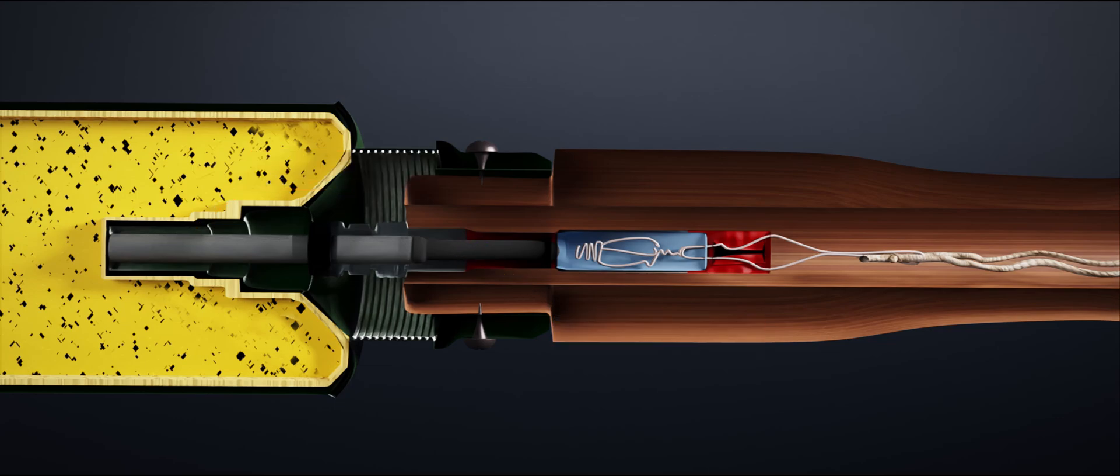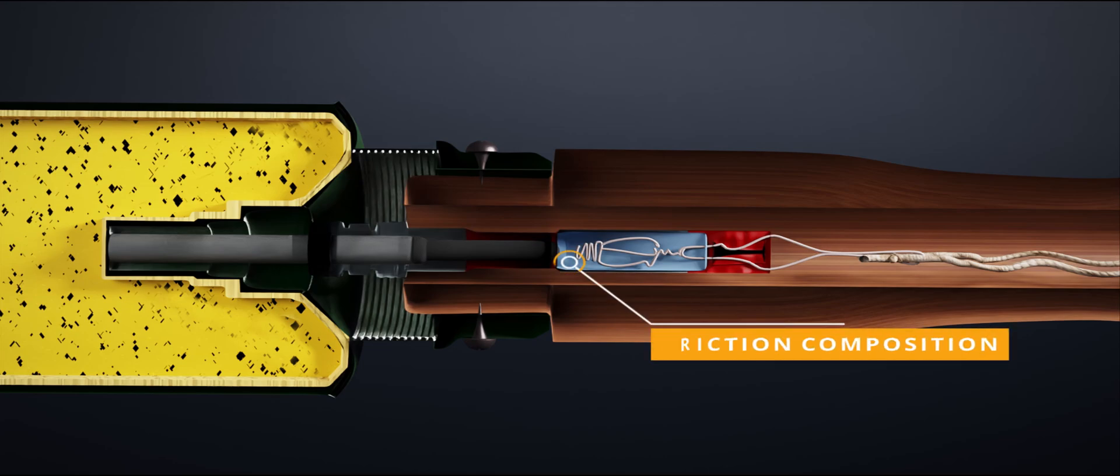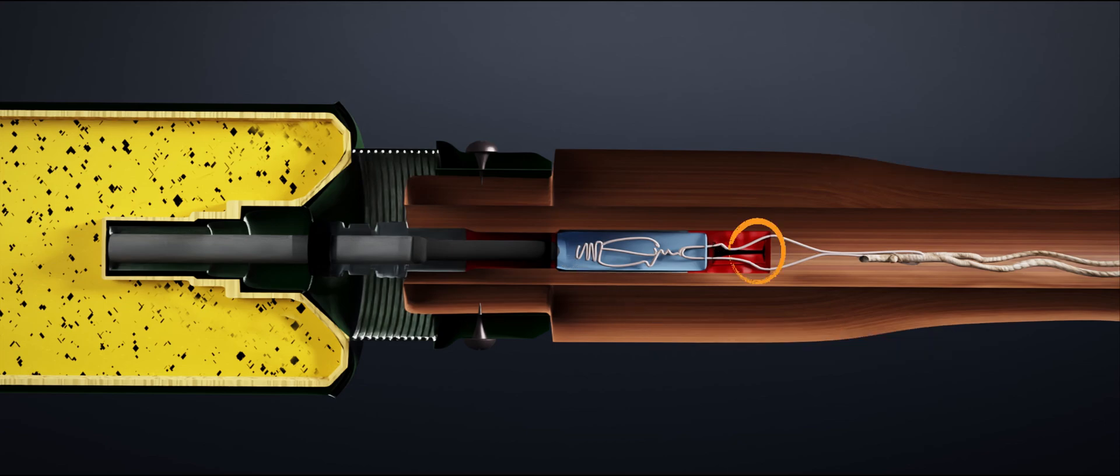The lead sheet contains a copper tube, which contains a friction composition inside it. A friction wire is placed inside the friction composition. The end of the burning tube is pressed to stop the free movement of the friction wire.